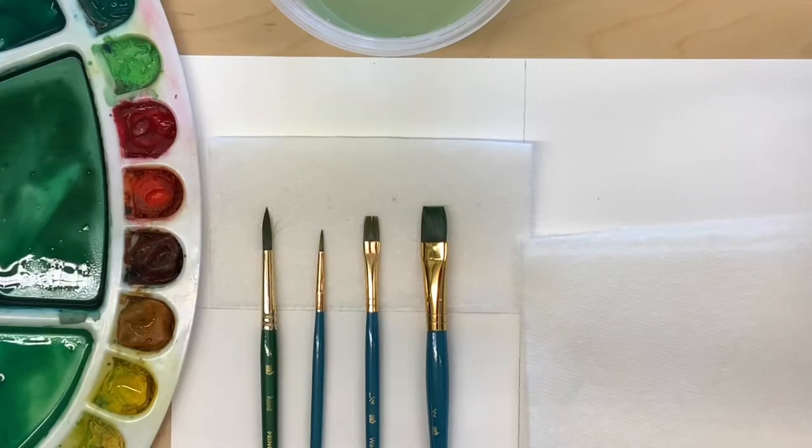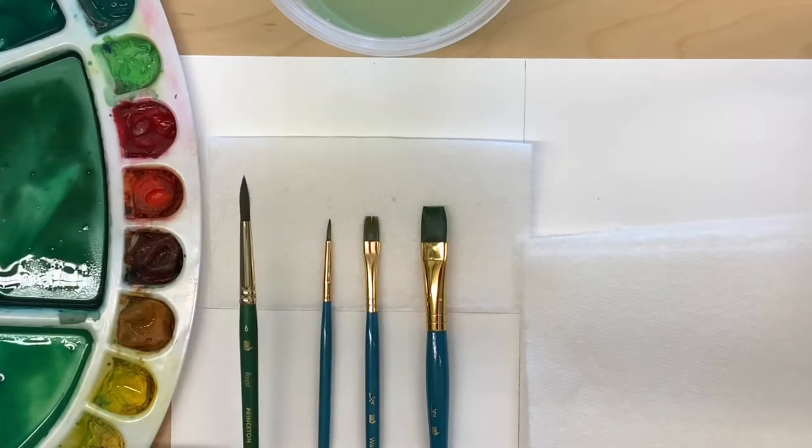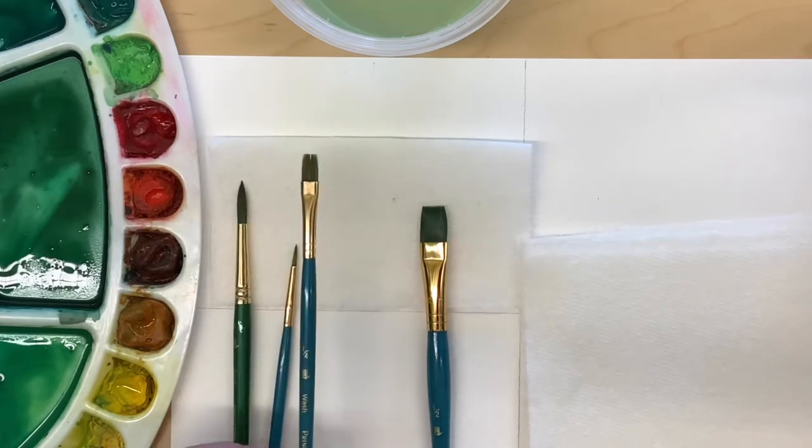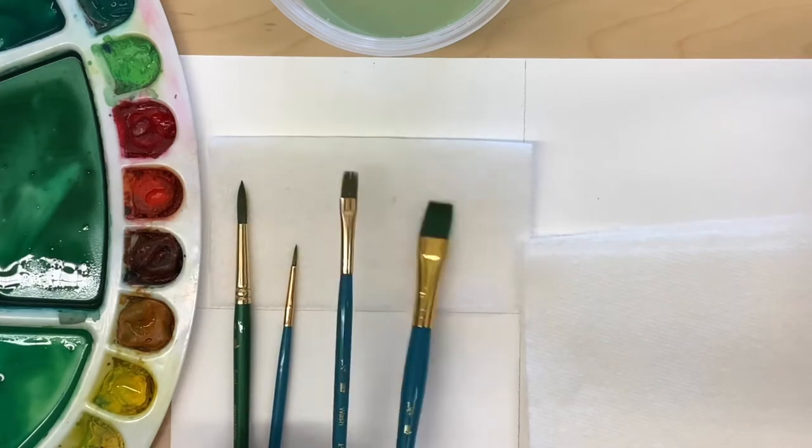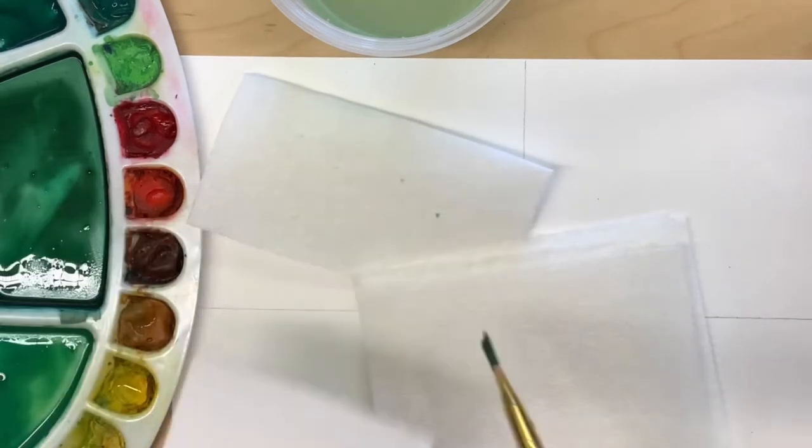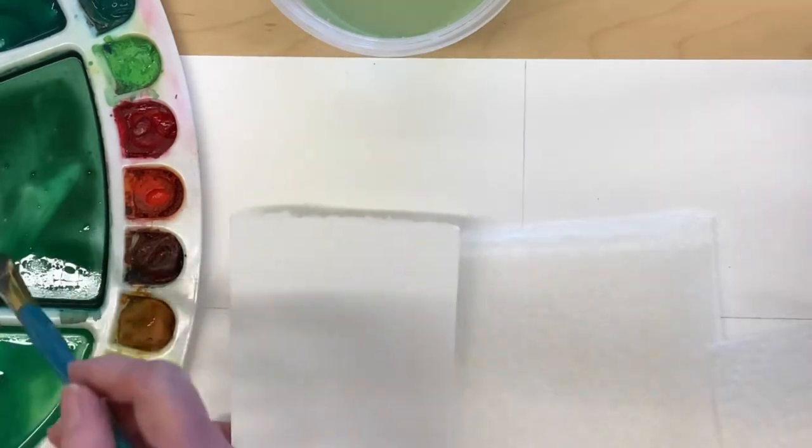We're going to paint some small evergreen trees. You will need four of your brushes: your number six round, your number one round, and your quarter inch and half inch flat, and some paper towel, some water, and a scrap that you can test your colors on.